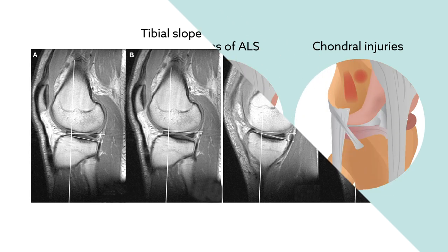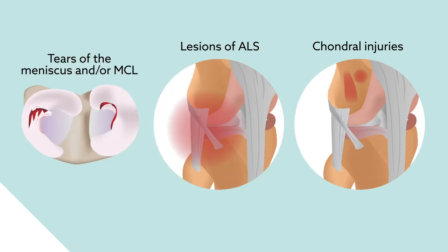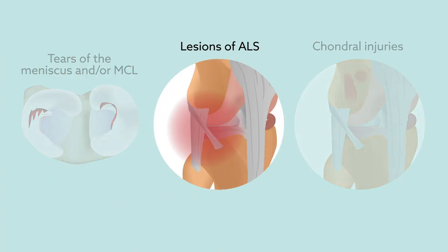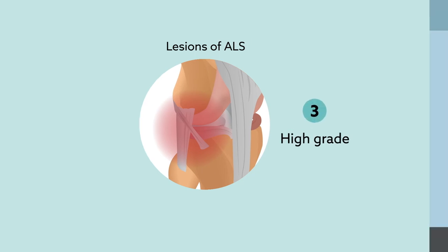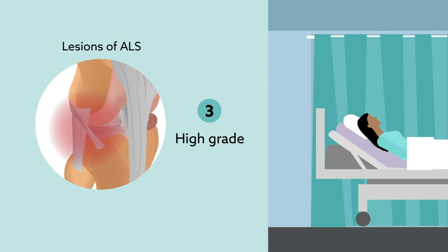A multivariate analysis revealed that ALS injury was the only significant risk factor associated with a grade 3 pivot shift. The finding is consistent with previous studies linking abnormalities of the ALS to a high probability of experiencing a high-grade pivot shift among patients undergoing ACL reconstruction.